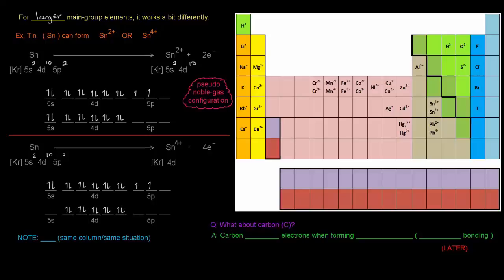Its orbital diagram will have all the 4d orbitals filled, and thus its configuration will be everything up to krypton and then 4d10. So that's also stable, but not quite noble gas stable.